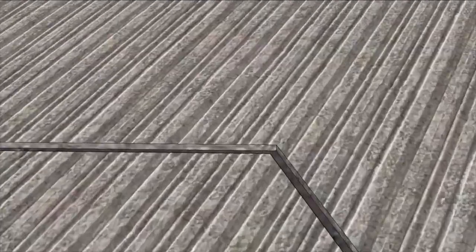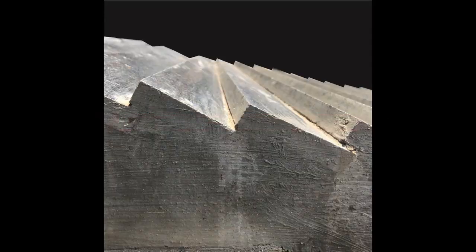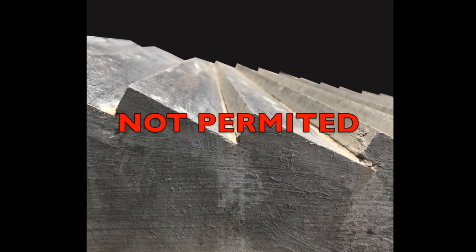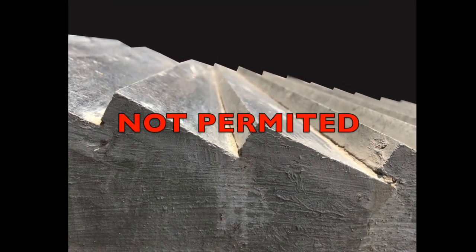Ramp surface. A ramp surface should be non-slip in material with water drainage. Raised traction tiling is specifically not allowed.